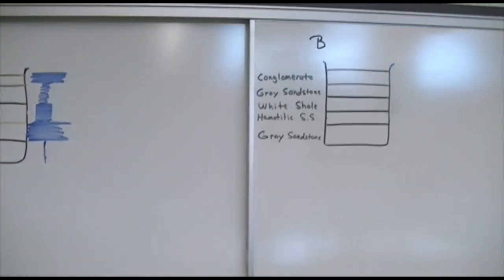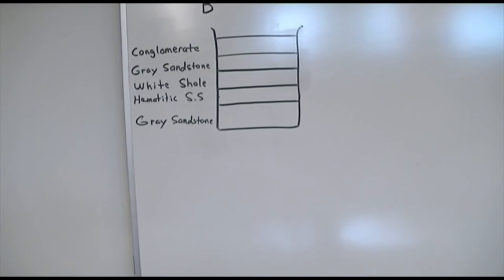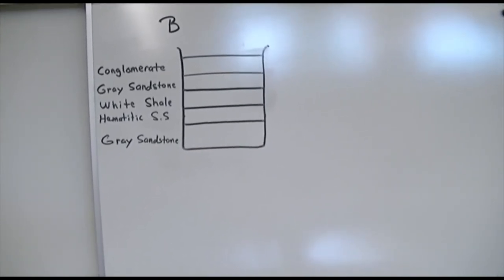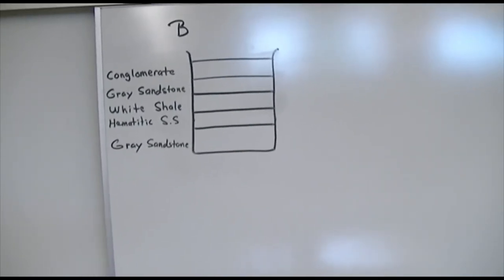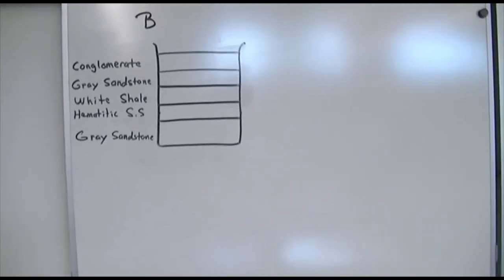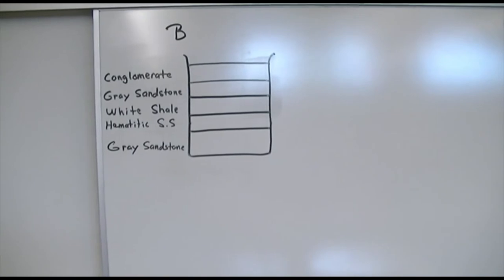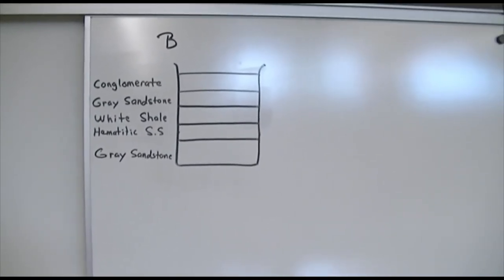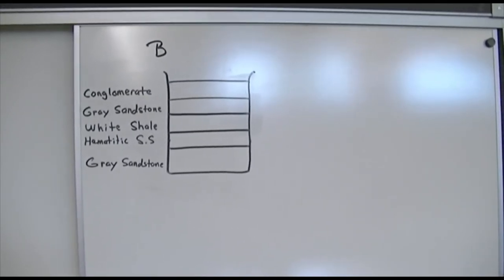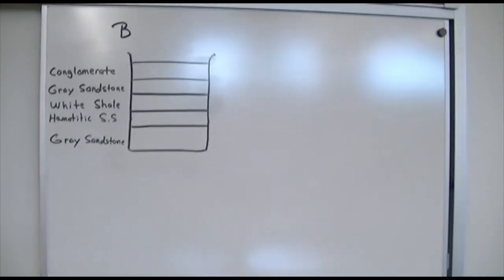Now moving to beaker B with green water and slightly different units: a conglomerate at the top, which is very coarse gravel-sized material. Below that is fine grain sandstone, which should have a high rate of porosity. Then the white shell, the hematitic sandstone — the same type as in beaker A — and at the bottom a coarse gray sandstone with potential for very high porosity.